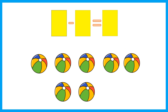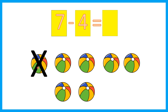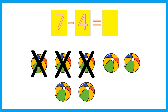Let's look at the next example. How many balls are there? 1, 2, 3, 4, 5, 6, 7. Seven minus four — we need to cross out four balls. 1, 2, 3, 4. So how many left? 1, 2, 3. That's right. Three.